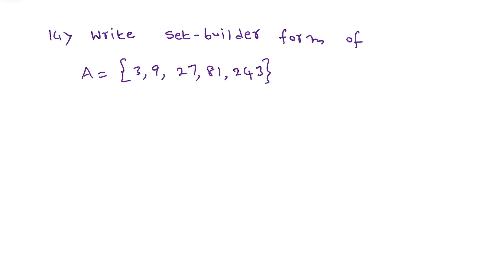Moving to the next question: write the set-builder form. For the previous one they gave set-builder form and we wrote roster form. Now roster form is given and we need to write the set-builder form. Set A = {3, 9, 27, 81, 243}. By looking at all these numbers, we need to find a hidden pattern or formula.